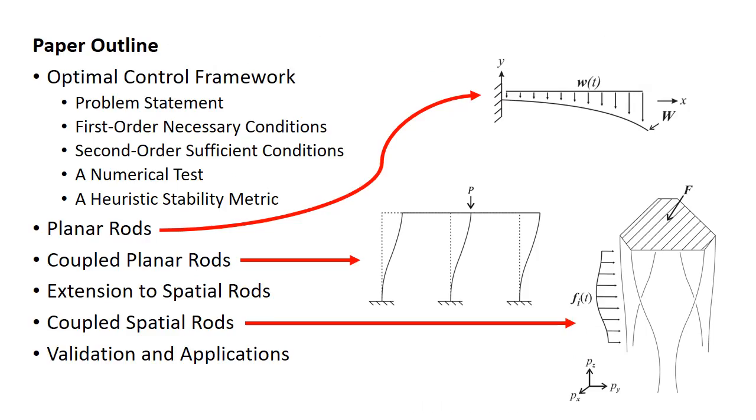In this paper, we adapt results from optimal control to determine the stability of Kirchhoff rods and COSERAT rods subject to general end constraints, including the coupled multi-rod models which describe parallel continuum robots. We formulate a sufficient condition for the stability of a given solution and also present a numerical test for evaluating this condition.